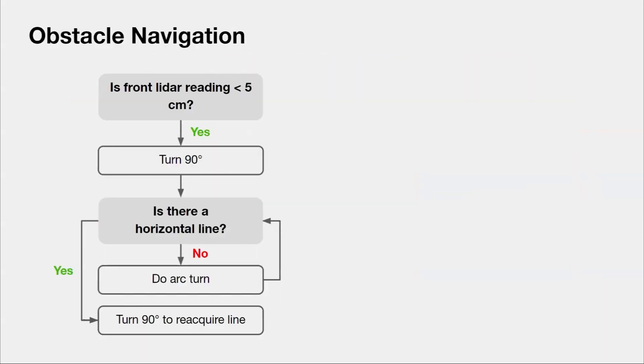To identify obstacles, we use our front-facing LIDAR to read the distance between the robot and anything in front of it. If the front LIDAR detects a distance of 5 cm from an object in front of it, the robot turns 90 degrees and does a continuous arc turn until it detects the continuation of the black line as a horizontal line in front of it. The middle of a black mask is cropped out of the frame. If the number of black pixels seen is higher than our threshold, it sees a horizontal line and turns 90 degrees to reacquire the line.